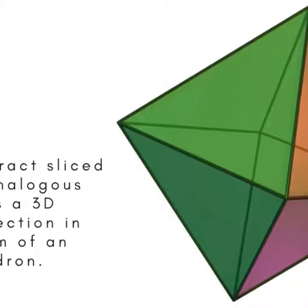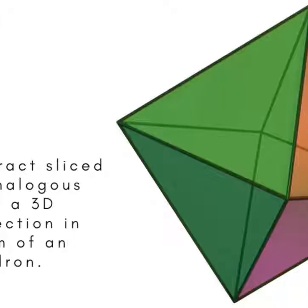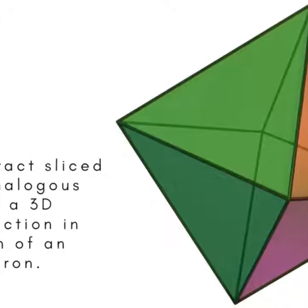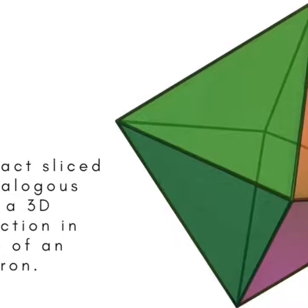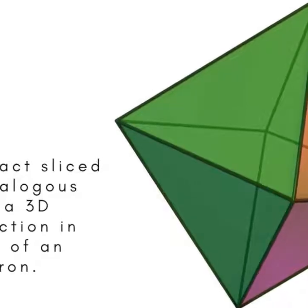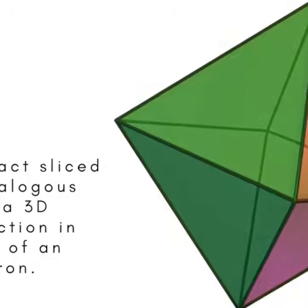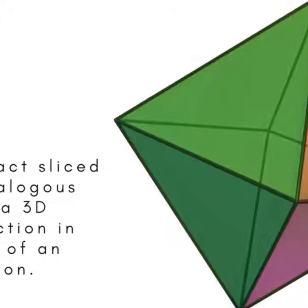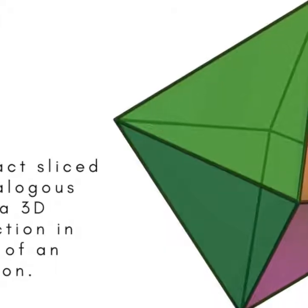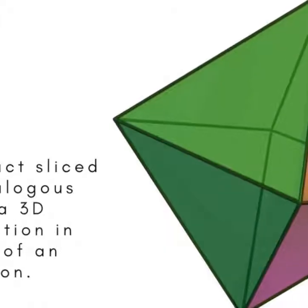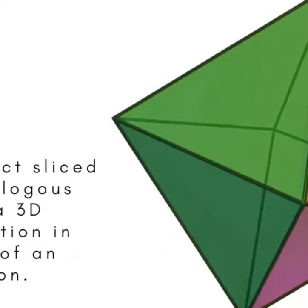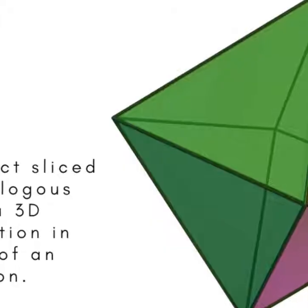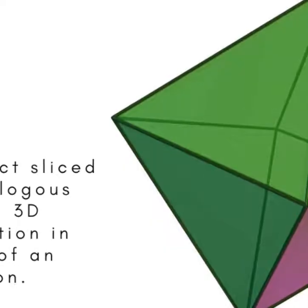By analogy with the slice of the 3-cube, the slice of the 4-cube must cut every face. The number of faces of a 4-cube is 8, and the only regular 8-sided solid is an octahedron.